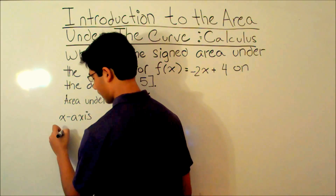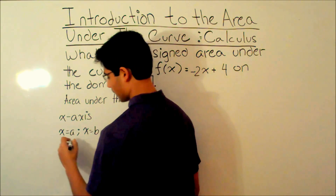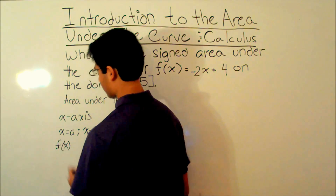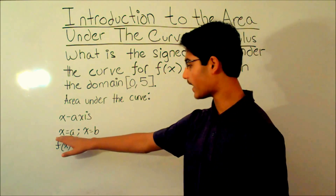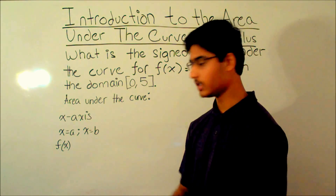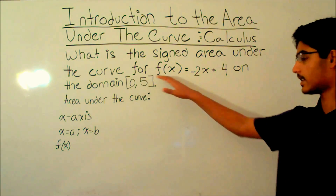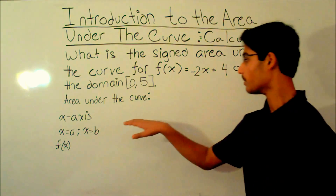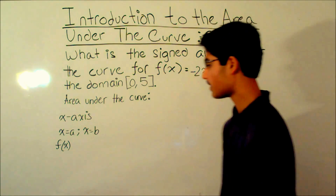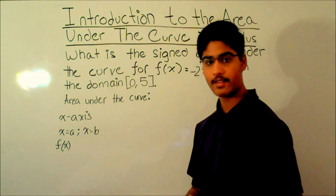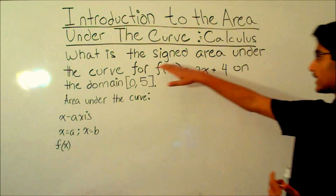It's also bounded by the line x equals a and the line x equals b, and f(x). These two lines are the domain we're looking at. In this problem, the line is bounded by x equals 0 and x equals 5 on both sides, and also bounded by f(x), or the function. Let's look at two scenarios to understand what the signed area is.